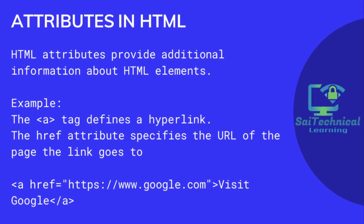HTML attributes provide additional information about HTML elements. For example, the anchor tag defines hyperlinks, and the href attribute specifies the URL of that particular web page. By clicking on the link text, the specified web page opens, using href equals the full HTTPS web link.